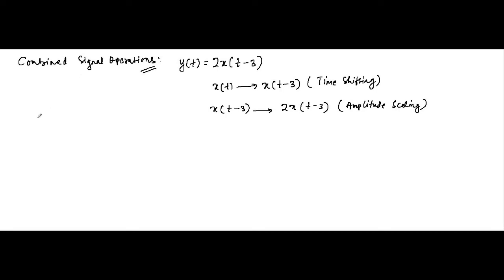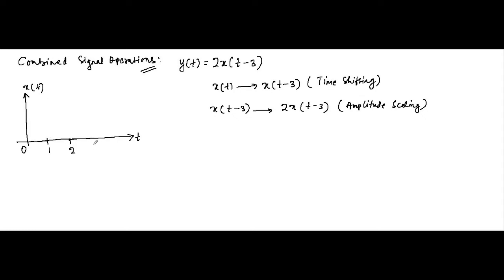Let's say the signal we are going to deal with is like this — this is x(t). On the time axis, the signal goes from 1 to 3, with an amplitude of 1. This is the original signal.